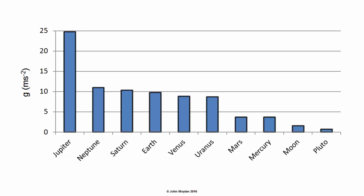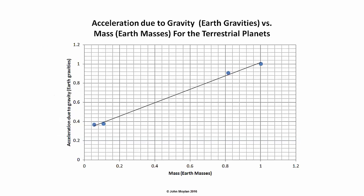The range goes all the way down to Pluto, which has less than 1 meter per second squared acceleration due to gravity on its surface, with the Earth around about the middle at 9.8 meters per second squared. This is visible in a graph of acceleration due to gravity versus mass for the terrestrial or rocky planets of the inner solar system.